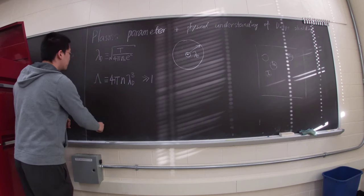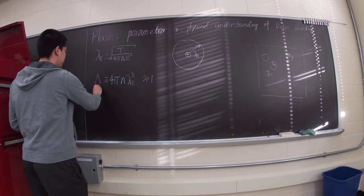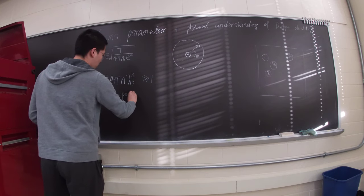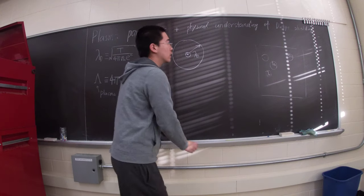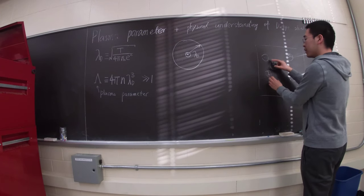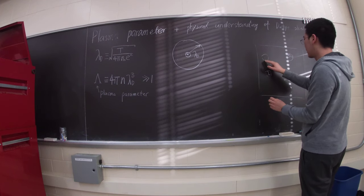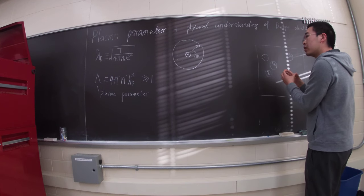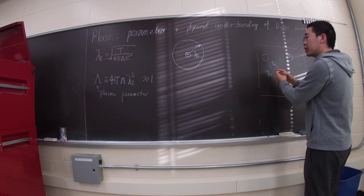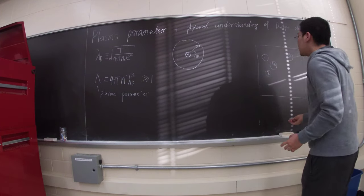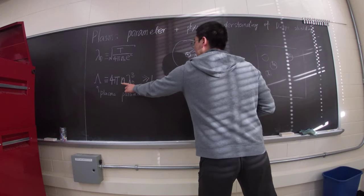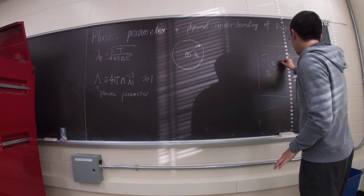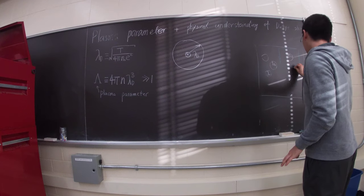The physical understanding of the plasma parameter is basically you have a cluster of bubbles. If you have a bubble, your bubble is small enough compared to how much space each particle occupies. For this case, 4πn λ_D³ > 1 means each particle occupies that much space.